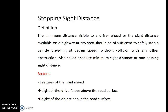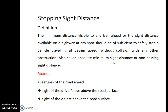By definition, stopping sight distance is the minimum distance visible to a driver on a highway at a spot, which should be sufficient to safely stop a vehicle traveling at design speed. You should be able to stop when you see an object ahead. If you do not provide sufficient length, the driver will not be able to react in time and will collide with obstructions. It is also called absolute minimum sight distance or non-passing sight distance.